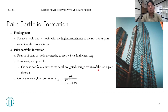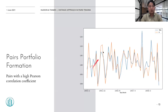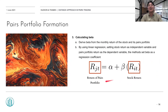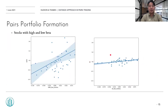There are pros and cons of each weighting method, so you may test either one. Here's an example of a pair with a high Pearson correlation coefficient. As you can see in the plot on the right side, the returns of the two stocks are moving in the same direction. After forming pairs portfolios for all stocks, we calculate beta. Beta is calculated using linear regression, setting the stock returns as the independent variable and the pairs portfolio return as the dependent variable. The method sets beta as the regression coefficient. Here is an example of stocks with high and low beta — the plot on the left shows a stock with high beta, and the plot on the right shows a stock with low beta.